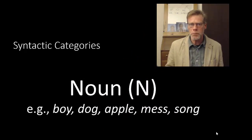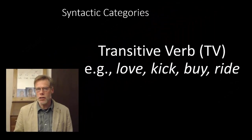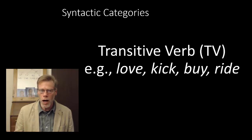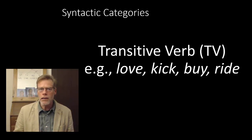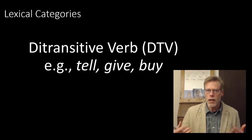Now I'm going to give you some exemplars for each part of speech, and I'm going to trust that with those exemplars you can figure out what else belongs in that part of speech. Noun: boy, dog, apple, mess, song. From there, you can extrapolate that thought and entropy are both nouns. Transitive verbs take an object: love, kick, buy, ride. They seem to need something after them to complete them — I love my dog, I love this ice cream. A ditransitive verb takes two objects: tell my wife a joke, give my dog a walk. Typically the first is the indirect object and the second is the direct object. A sentential complement verb takes a subordinate clause — an embedded sentence: I think that my dog needs a walk; I wonder whether my dog needs a walk.